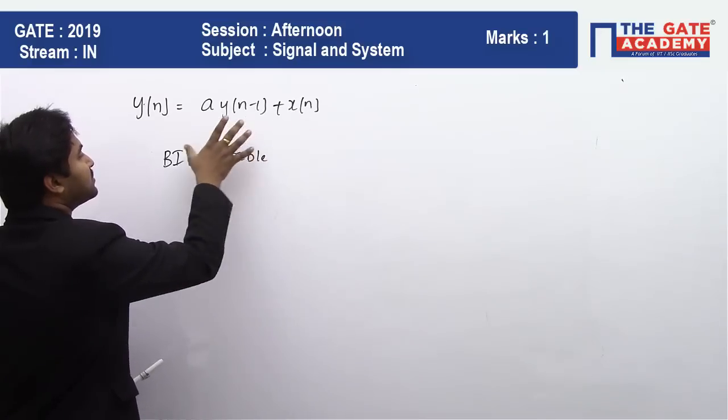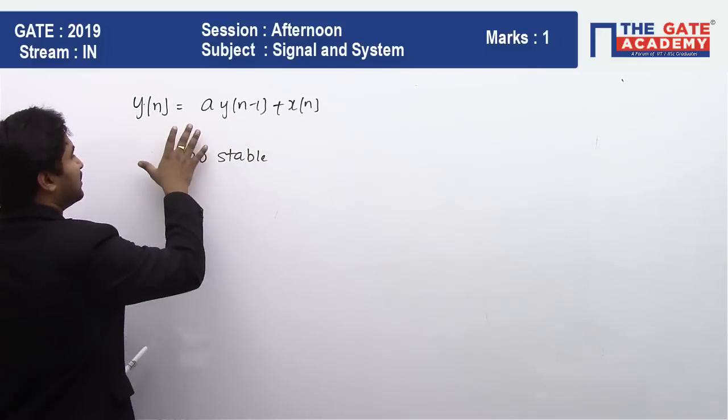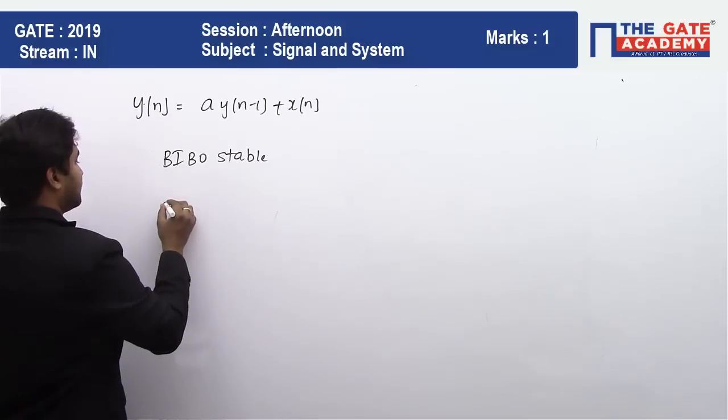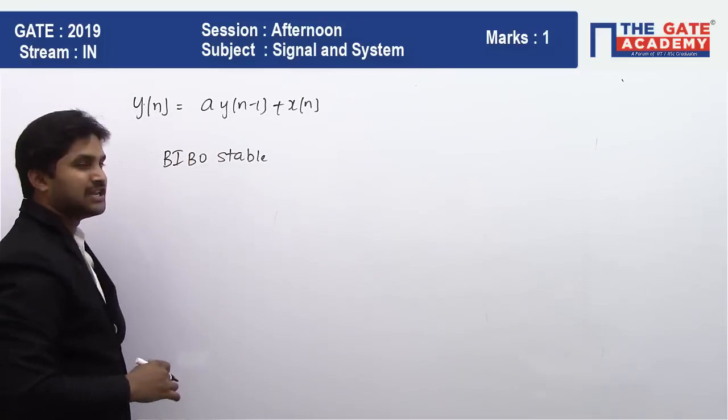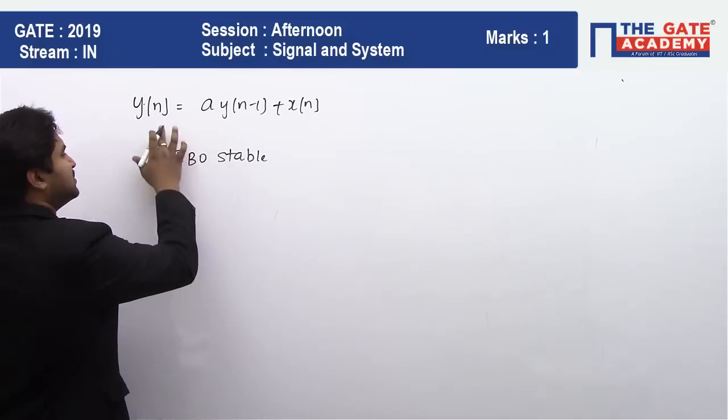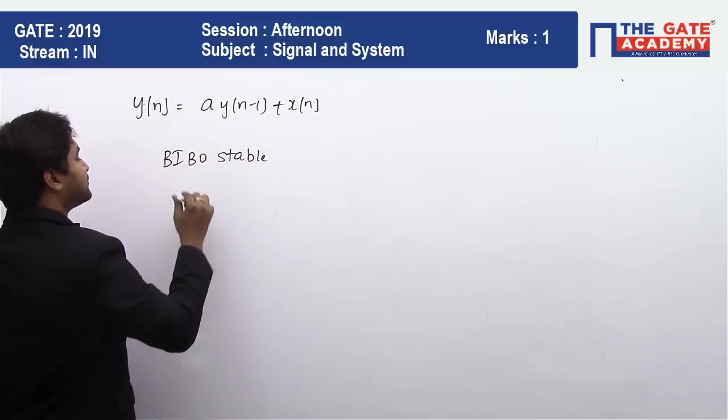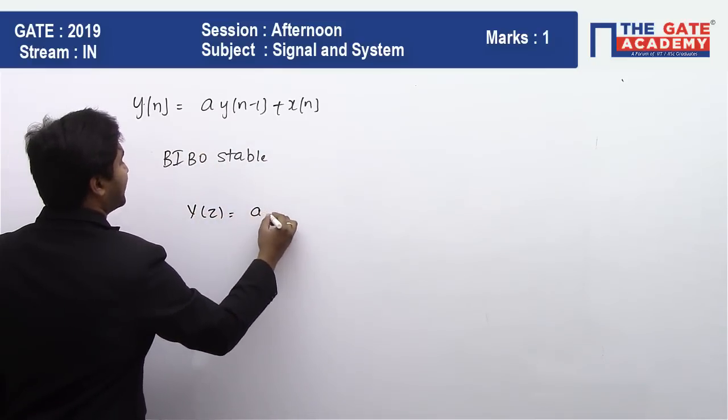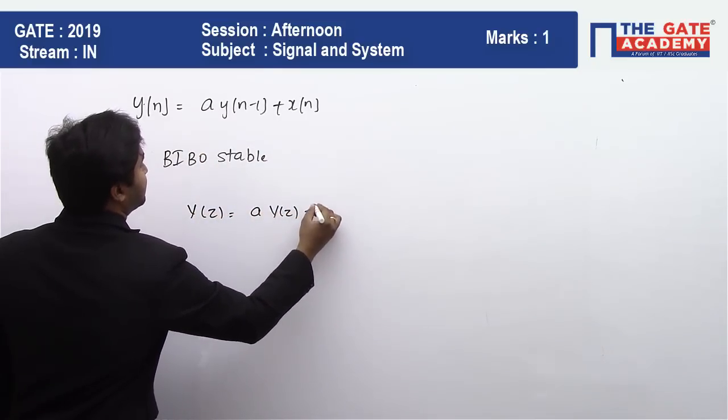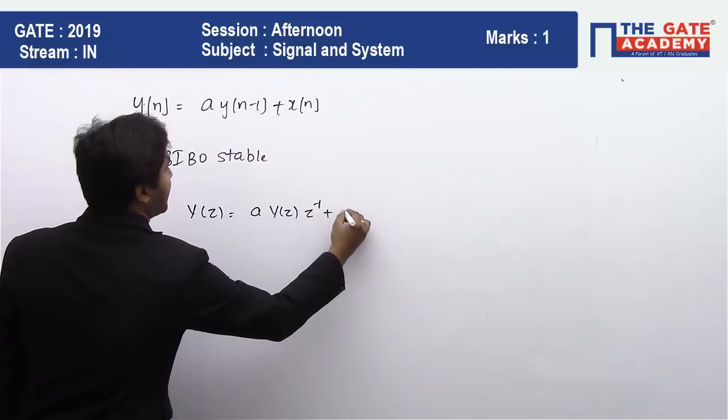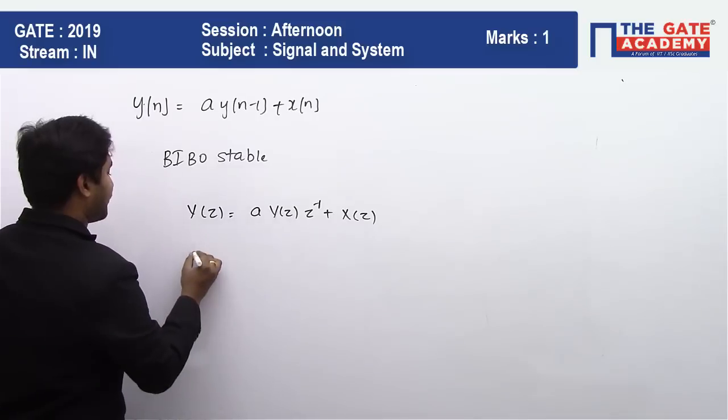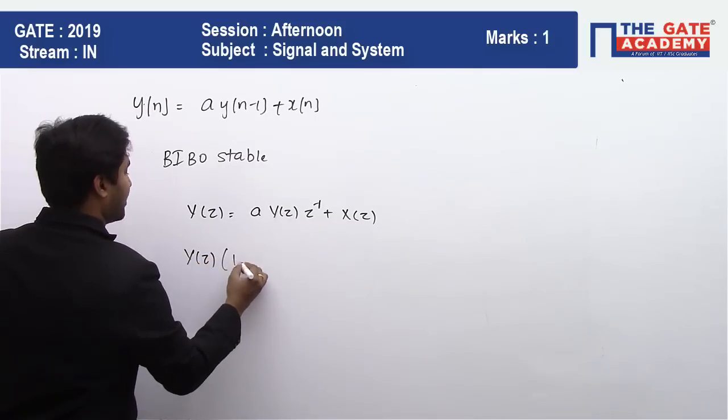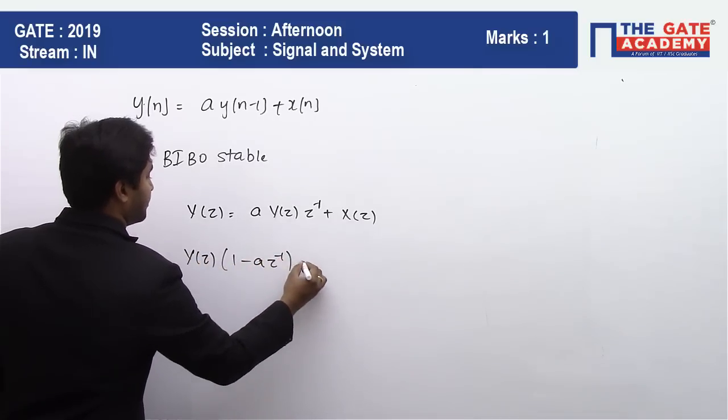So let us try to find H(z), which is the transfer function, which we can do when we apply the Z-transform on both sides. Y(z) = a·Y(z)·z^(-1) + X(z). Therefore, Y(z)(1 - az^(-1)) = X(z).